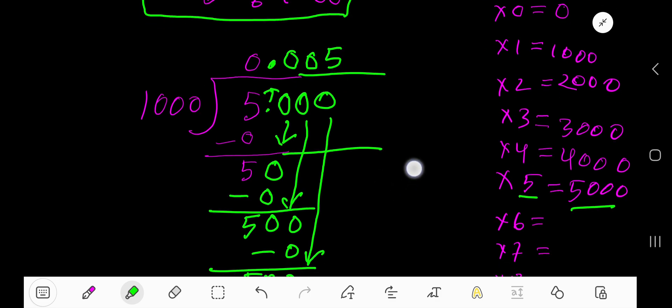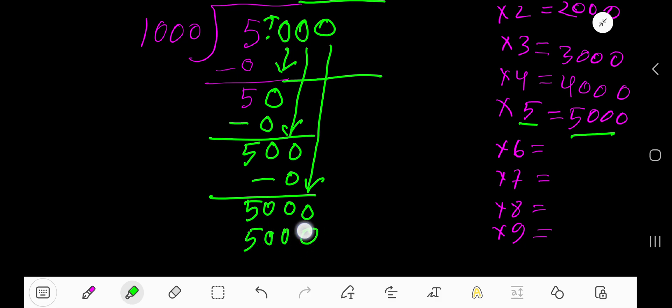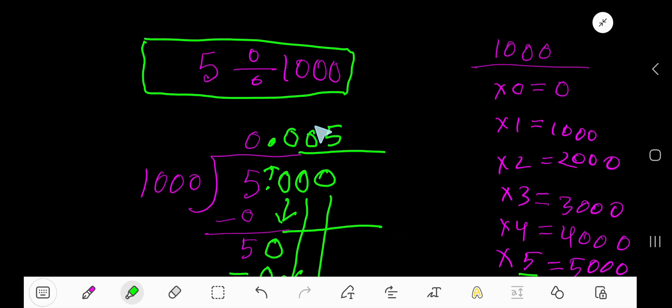5 times 1,000 equals 5,000. If you subtract, you will get 0. So your result is 0.005.